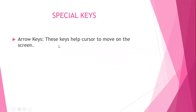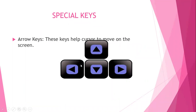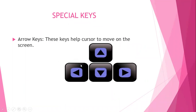Now we will move to the next type of key — arrow keys. Arrow keys help the cursor to move on the screen. This is the picture of arrow keys, and they are also known as navigation keys. The up arrow is used to go up, the down arrow to go down, the left arrow to go left, and the right arrow to go right. That is why these keys are also known as navigation keys.